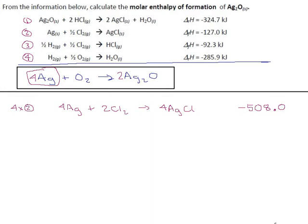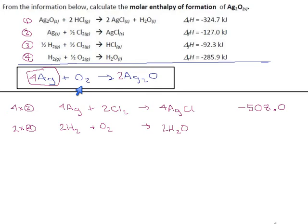We need one mole of oxygen, and reaction four is the only one that offers us any oxygen. If we take it and double it, that gives us the one mole of oxygen we require. Two times reaction four gives us two hydrogen and an O₂ on the left, and two water on the right. Our finished reaction isn't supposed to have hydrogen or water in it, so we're picking up some unwanted stuff. But we had to have the oxygen, so we didn't have a choice. Just anticipate there's going to be more work ahead to clean up the mess. Doubling reaction four, the delta H is minus 571.8.